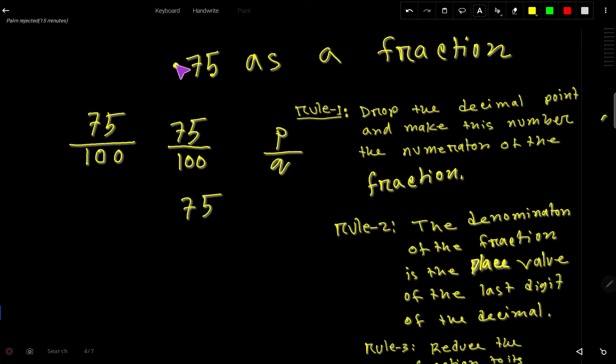You have to drop the decimal point and write the number, then write the number 10 and place the power of 10. After the decimal we have two digits, so the power of 10 will be 2. These are three ways to convert a decimal number to a fraction.